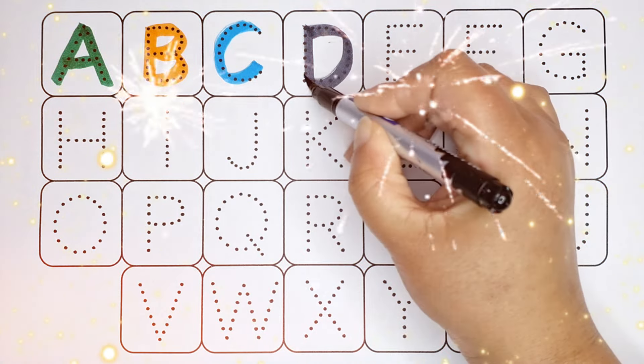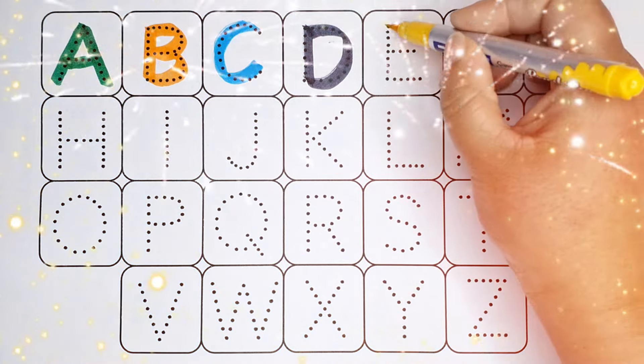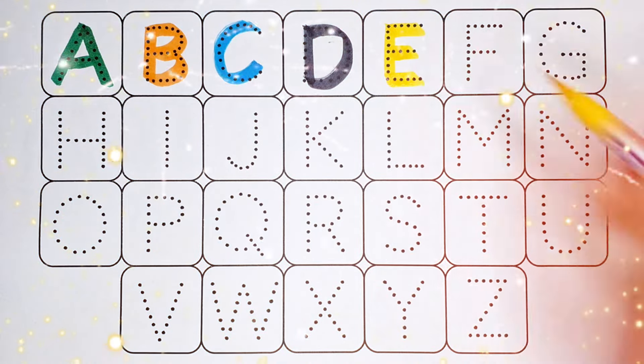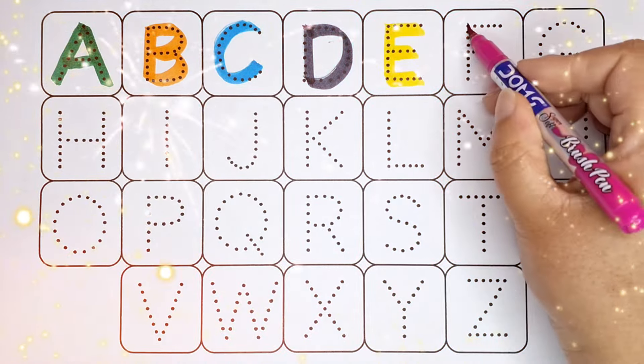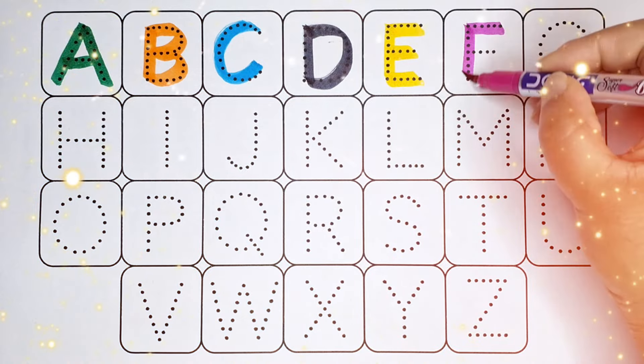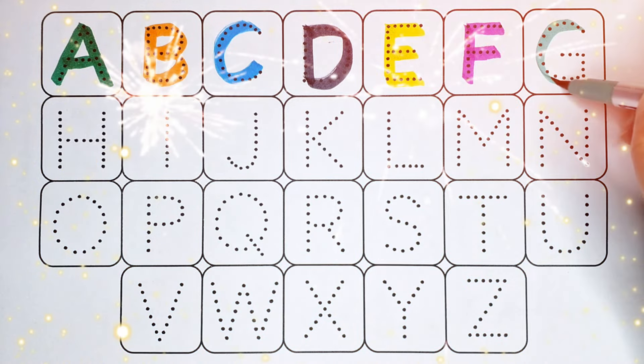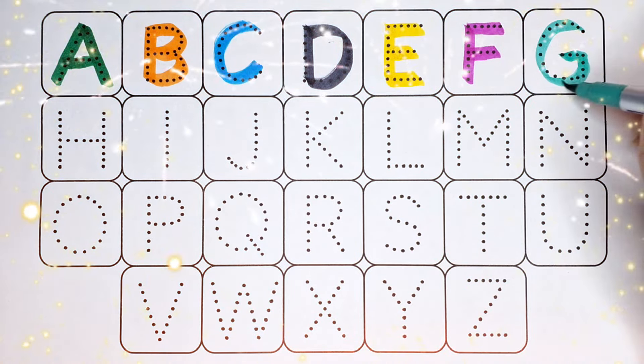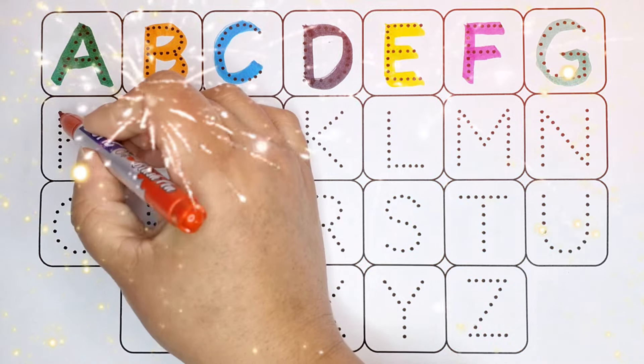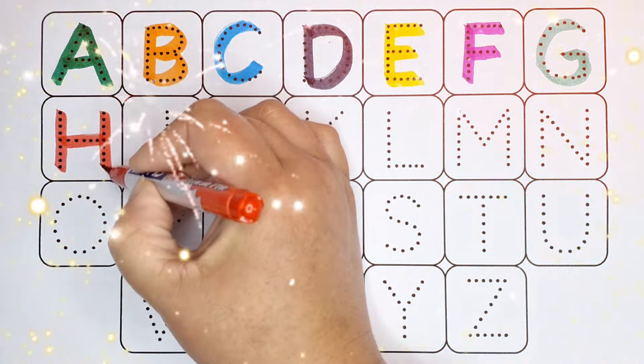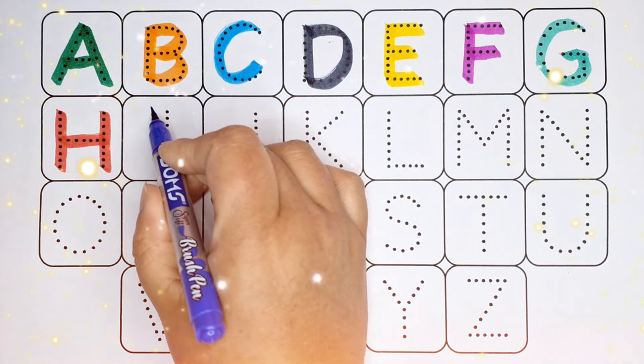Black color D, D for donuts. Yellow color E, E for eye. Pink color F, F for fish. Light green color G, G for goose. Red color H, H for hen.